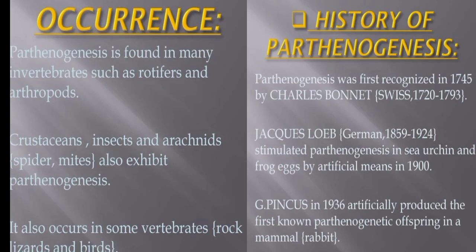Normal egg cells form in the process of meiosis and are haploid, with half as many chromosomes as their mother's body cells. Haploid individuals, however, are usually non-viable, and parthenogenesis offspring usually have the diploid chromosome number. Depending on the mechanism involved in restoring the diploid number of chromosomes, parthenogenesis offspring may have anywhere between all and half of the mother's alleles.